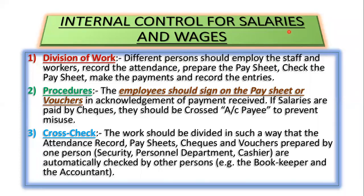Internal control for salary and wages is important in large organizations because the transactions are quite large. They should be properly segregated into several parts. This includes tracking how many employees have worked, the number of hours worked per day — some organizations have seven hours, some eight, some nine — and attendance should be monitored through a muster register recording entry and exit times, or a punch card system.